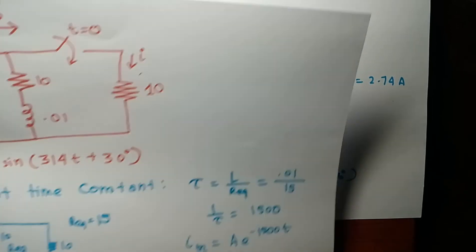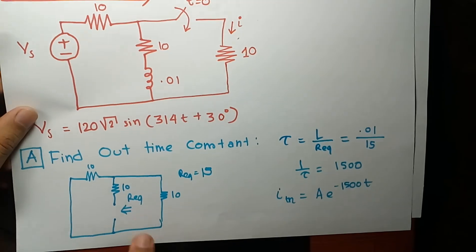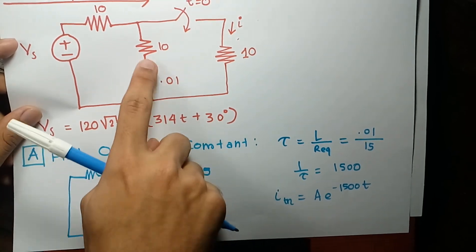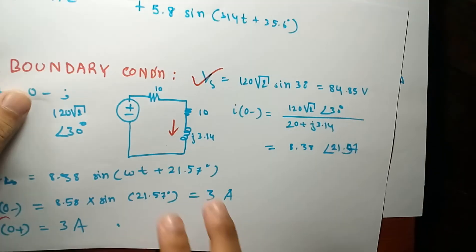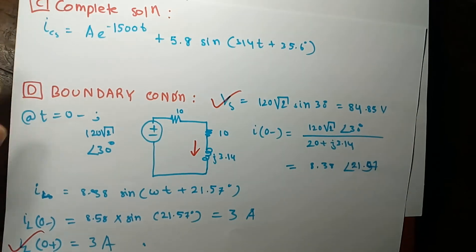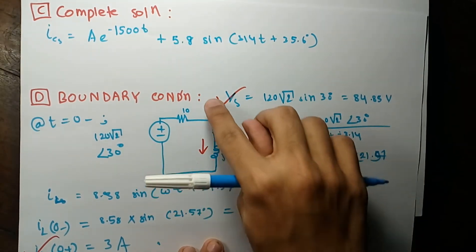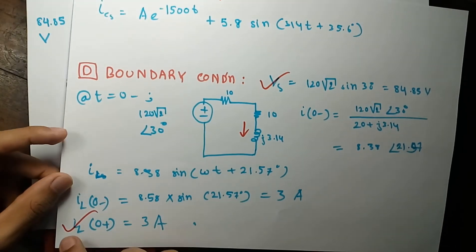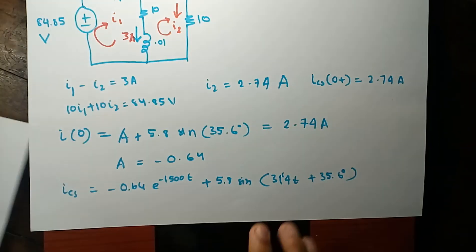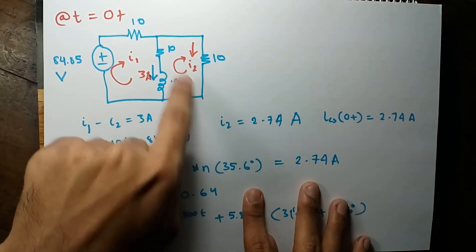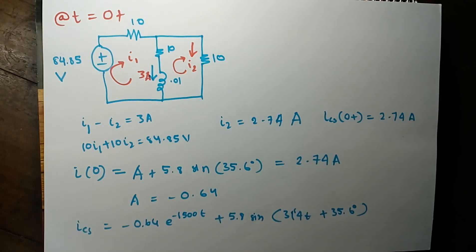That is the way this problem is solved. Remember two key things. The first key thing is to find out R equivalent — R equivalent is always the resistance seen from the inductor terminal. The second key thing is to find out the boundary condition: to find the current through the resistor at t equals 0 we need the voltage source value at t equals 0 and the current through the inductor at t equals 0. We put these into the circuit to obtain the current through the 10 ohm resistance at t equals 0. That is all for example circuit 3.